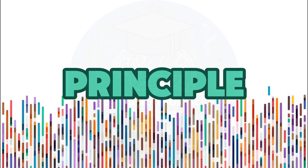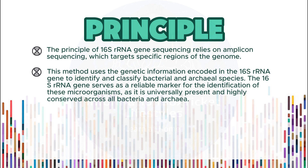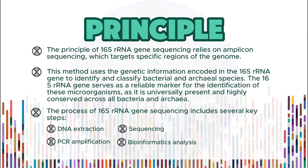The principle of 16S rRNA gene sequencing relies on amplicon sequencing, which targets specific regions of the genome. This method uses the genetic information encoded in the 16S rRNA gene to identify and classify bacterial and archaeal species. The 16S rRNA gene serves as a reliable marker as it is universally present and highly conserved across all bacteria and archaea. The process includes several key steps: DNA extraction, PCR amplification of the 16S rRNA gene, sequencing, and bioinformatics analysis.